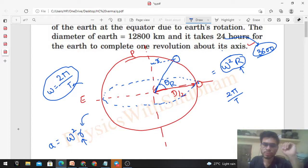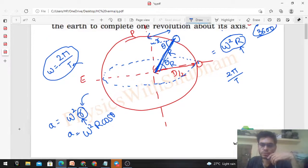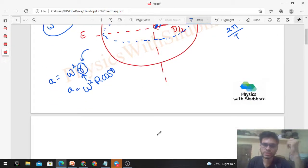So now we have to find small r, and small r we can easily find out. Look, if this angle is theta, then this angle will also be theta. Then what is this? Radius R, right? So R cos theta equals small r. So omega square into capital R cos theta - this is the value of acceleration.